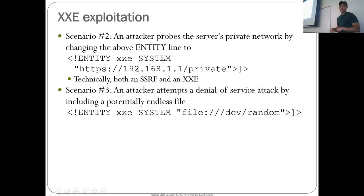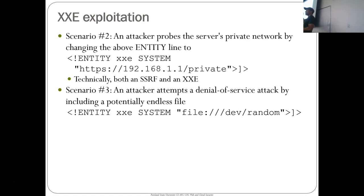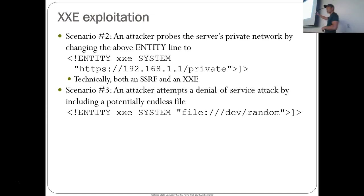There will be a lab in your SSRF labs where you're scanning sequentially a list of IP addresses on the backend. I've got a Python script in the lab writeups — I'd suggest you use that rather than trying to sequence things in Burp or Postman. Scenario three is a denial-of-service attack — you tell the parser to get /dev/random, which is an infinite stream of pseudo-random data, and that'll basically cause a denial-of-service against your parser.